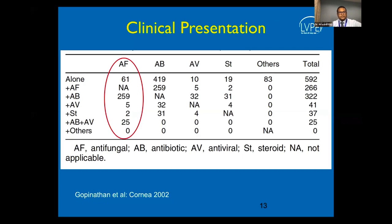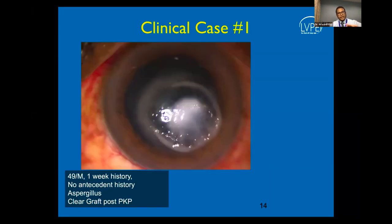When patients present, they often come with a topical antifungal prescribed elsewhere, or a combination with antibiotics and antifungals, or over-the-counter medications that also have a steroid, which confuses the clinical picture. There are classic features of fungus on the first visit: typically a very dry-looking ulcer with an indistinct feathery fuzzy margin, a ring infiltrate, and some satellites.